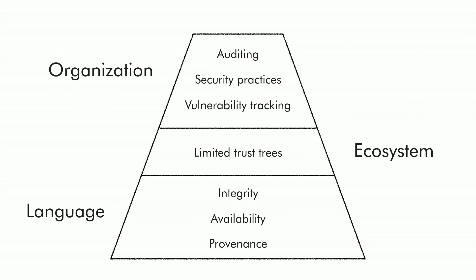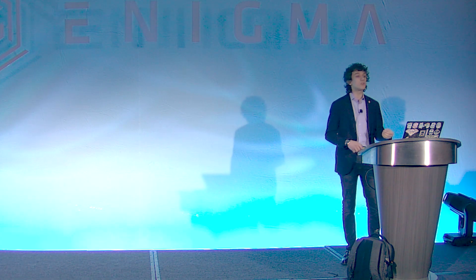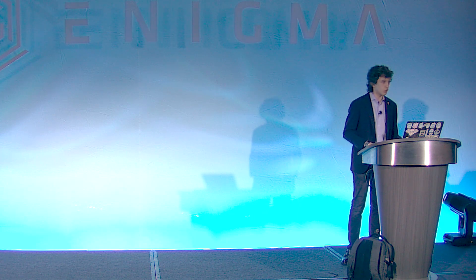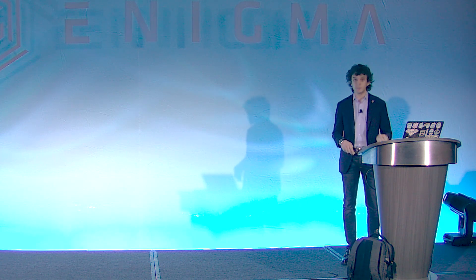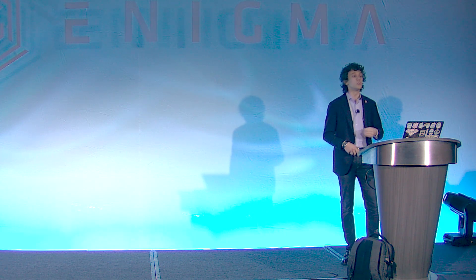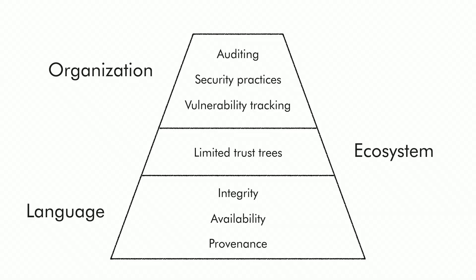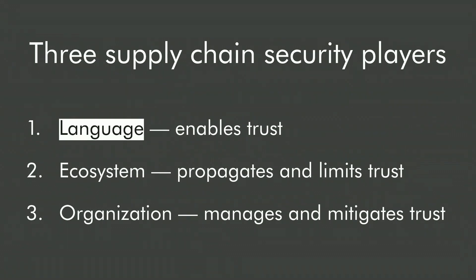We're going to talk about the problem that each player has to solve, both in general, and how Go specifically solved them. Go had the advantage of shipping a solution after looking at how everybody else had solved it, how problems had developed, and what new technology was available. Go introduced native dependency management in 2018 with Go modules, and at that point we had the privilege to look at everything that happened before.